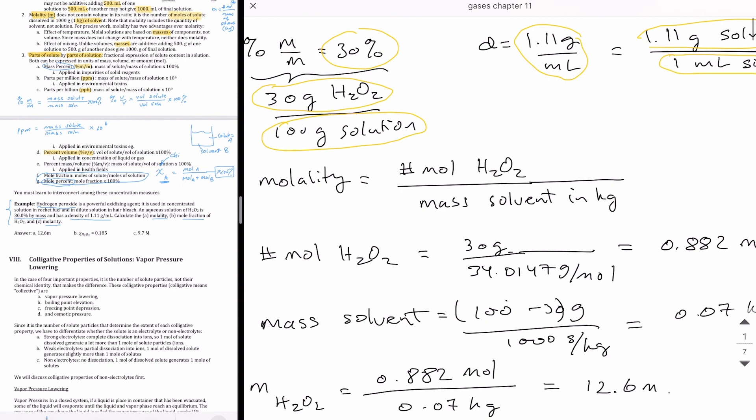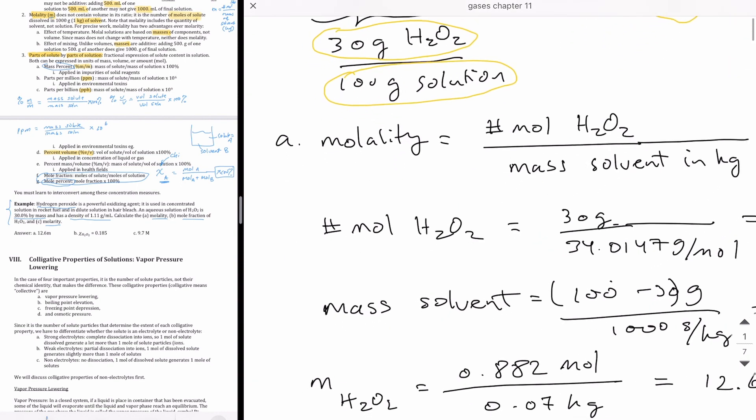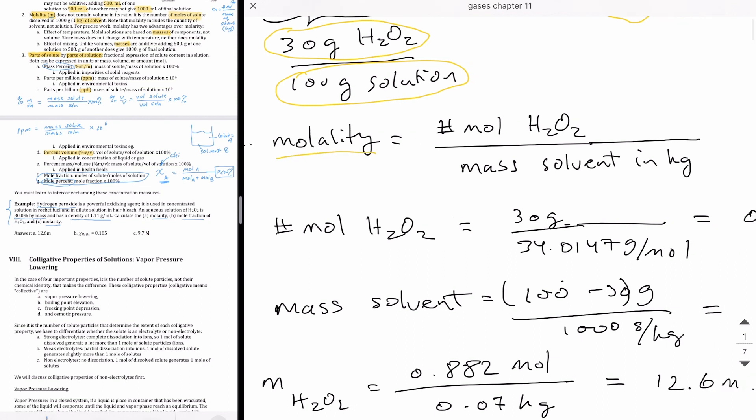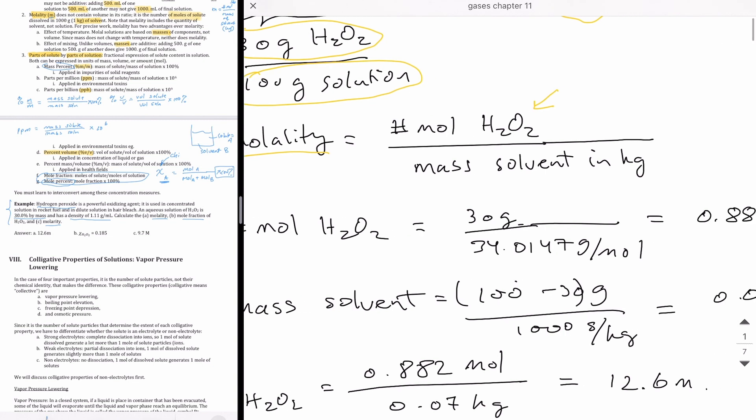That's what that number refers to. Now let's see how we can use those information to calculate the different things that were asked. First one is molality. For molality to calculate, we're going to need to have number of moles of the solute, which is hydrogen peroxide,